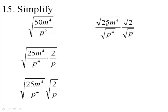So now this is going to be 5m squared. This is going to be p squared. 5m squared and p squared.